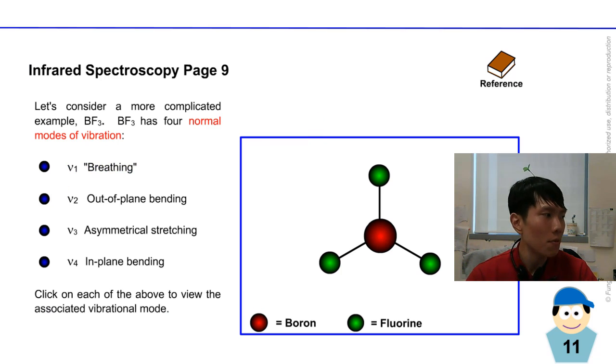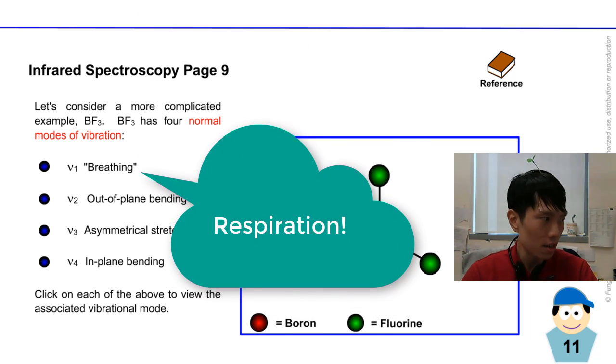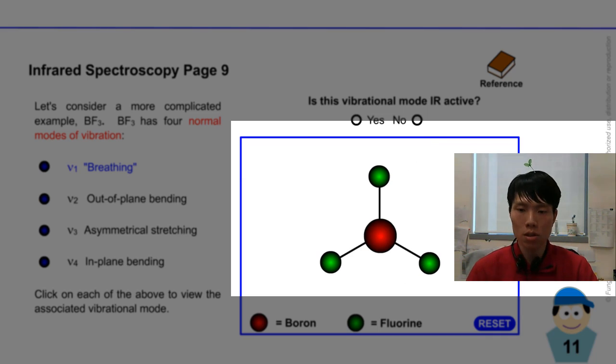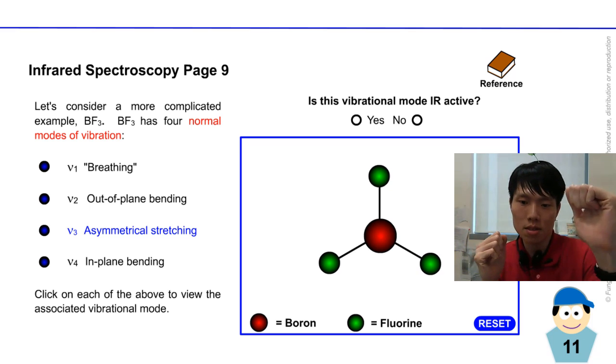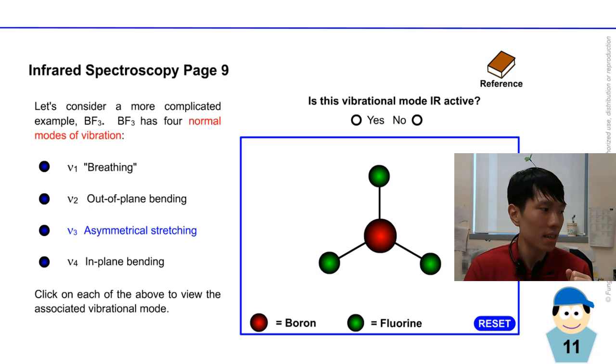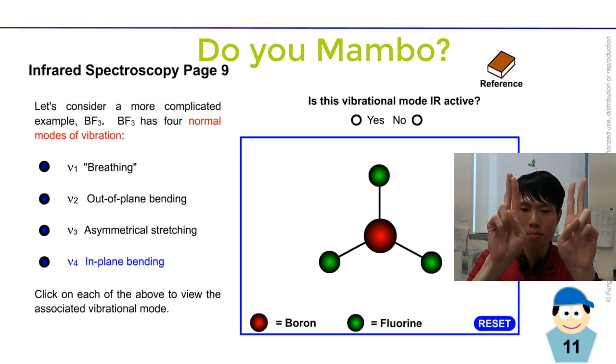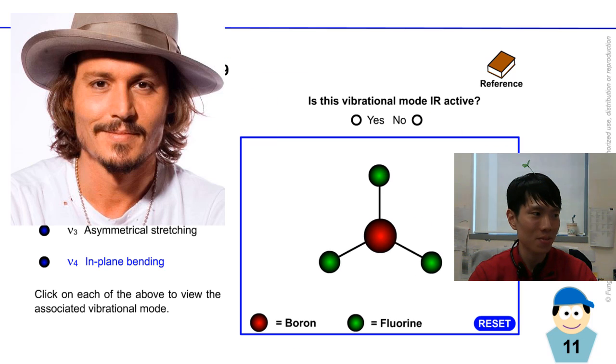There are four kinds of vibrational modes. Let's experience them. What's breathing? Breathing, see, like in-out, in-out breathing. Then out of plane bending - you see it boom boom boom. Asymmetrical stretching, asymmetrical asymmetrical. And in-plane bending - in plane means on the plane because it's a flat molecule, so it will bend. You see the bond just squeeze towards each other, bend bend bend. Like scissor hands.